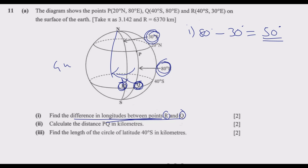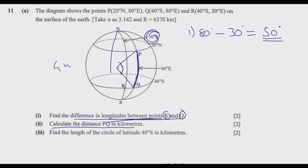Now we look at part 2: calculate the distance PQ in kilometers. We are talking about the arc distance between P and Q along the great circle. We need to find the angle subtending this arc. Once we know this angle theta, we use the formula: distance equals theta over 360, multiplied by 2 pi R.